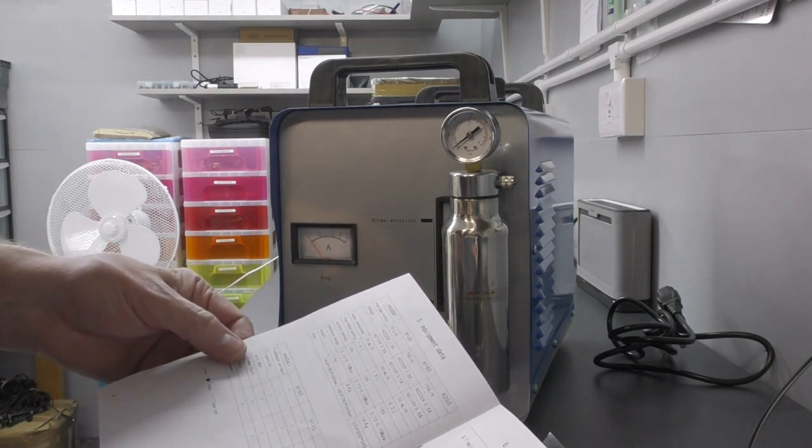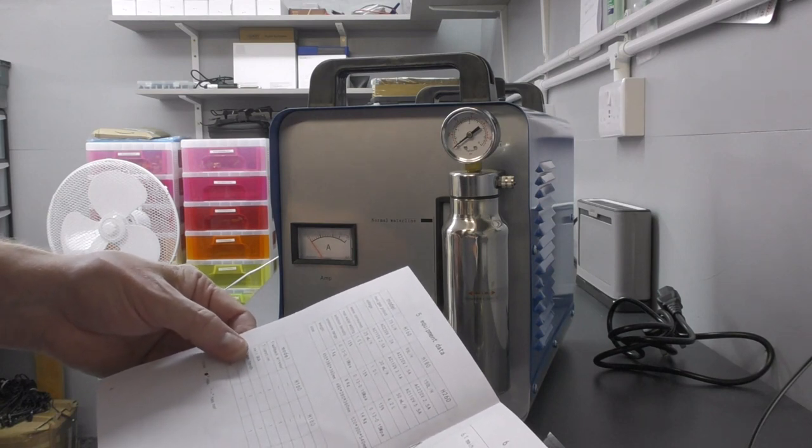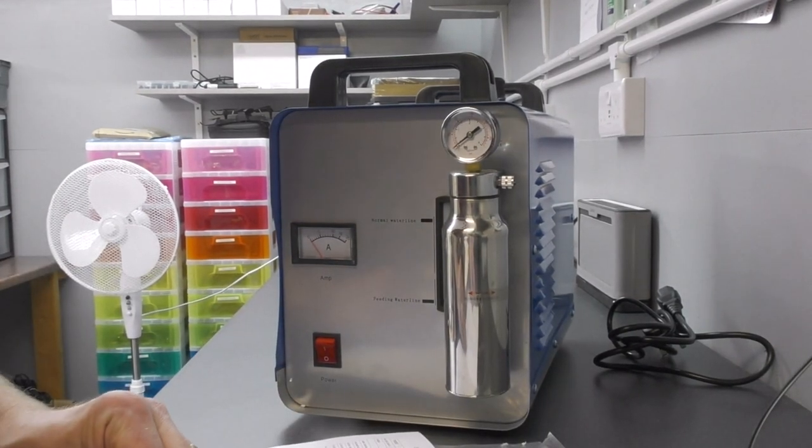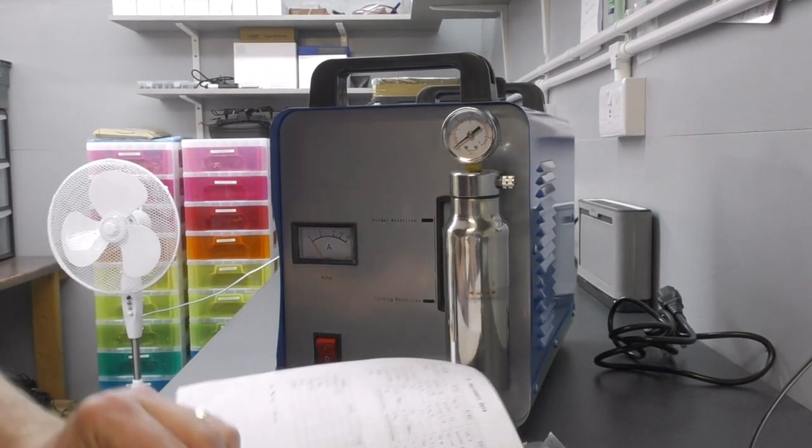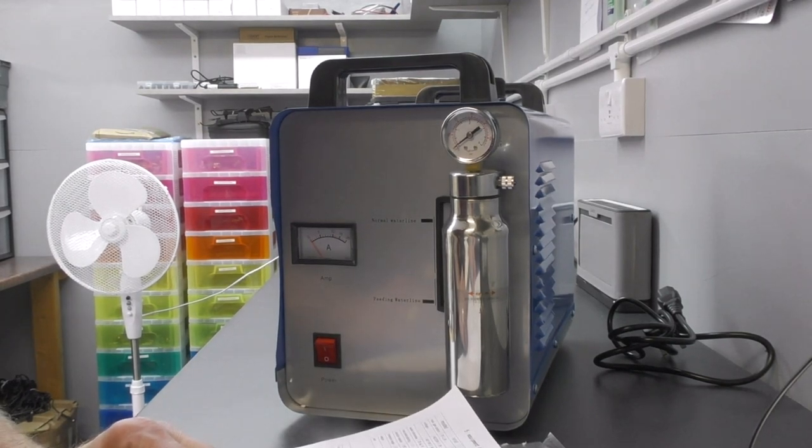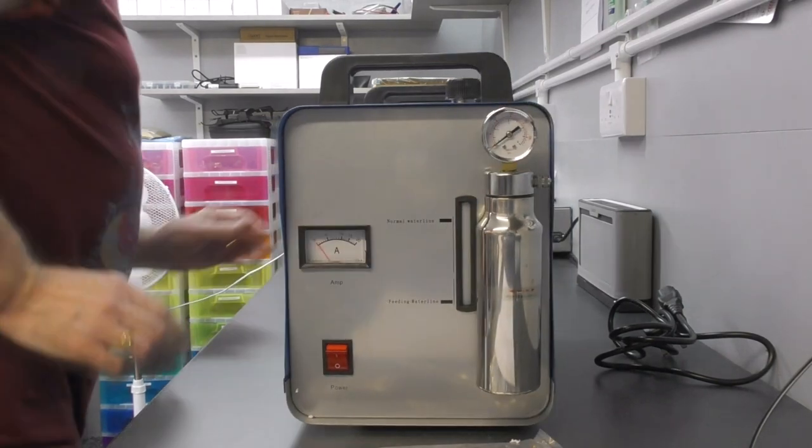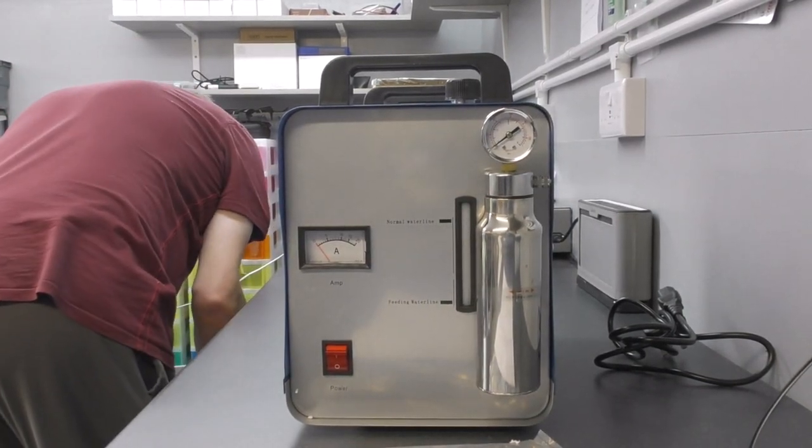So we don't have a flashback arrester, we don't have a T-junction. Packing list: torch, tube, funnel. I don't remember seeing a funnel. Oh there it is.